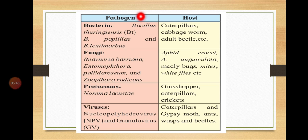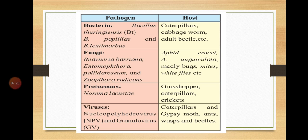Bacterial pathogens include Bacillus thuringiensis, Bacillus papillae, and Bacillus lentimorbis, which target hosts such as caterpillars, cabbage worm, and adult beetles. Fungal pathogens include Beauveria bassiana, Entomophthora, Paecilomyces, and Zoophthora radicans, targeting aphids, mealybugs, mites, and whiteflies. Protozoan Nosema locustae targets grasshoppers, caterpillars, and crickets. Viral pathogens nucleopolyhedrovirus (NPV) and granulovirus (GV) target caterpillars, gypsy moth, wasp, and beetles.